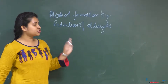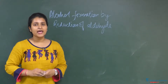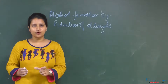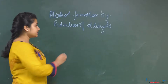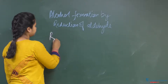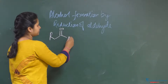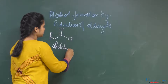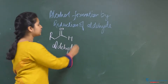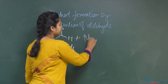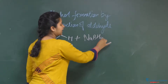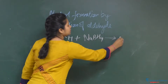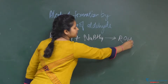Alcohol formation by reduction of aldehyde. Aldehyde can be reduced to alcohol by NaBH₄, sodium borohydride. This aldehyde, on reaction with NaBH₄, which is a reducing agent, gives RCH₂OH.